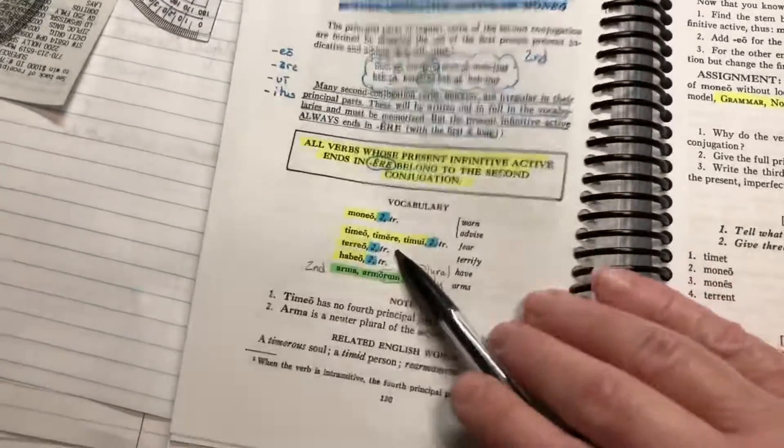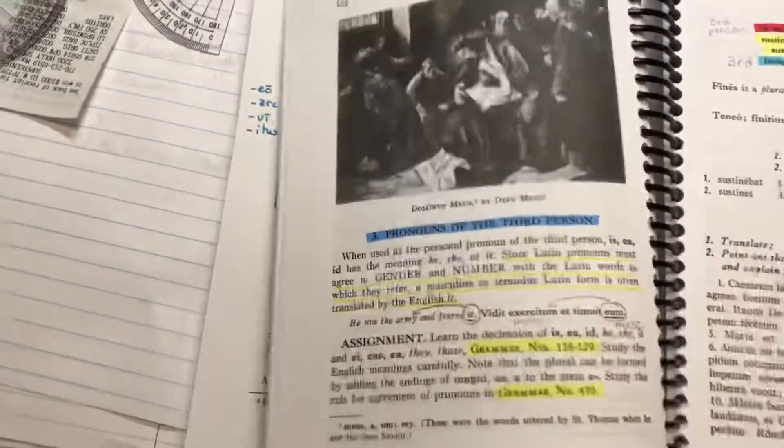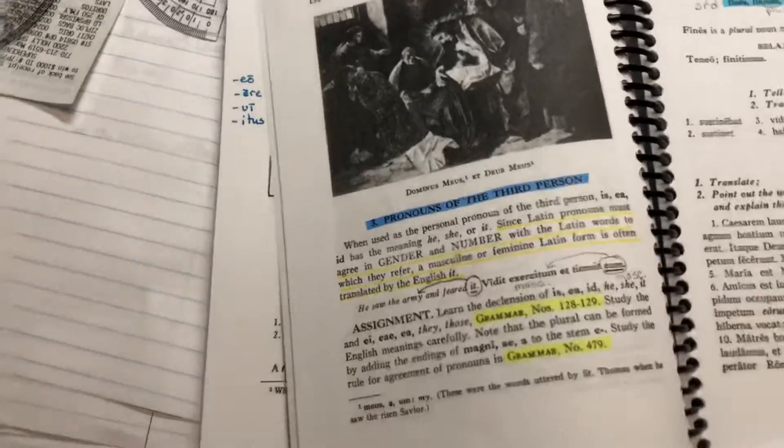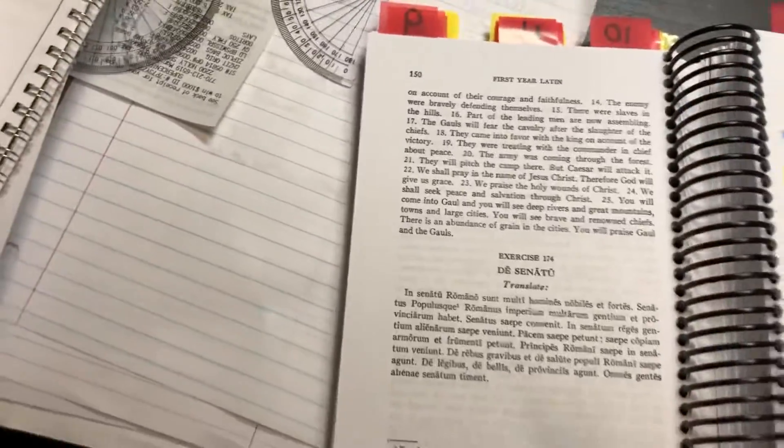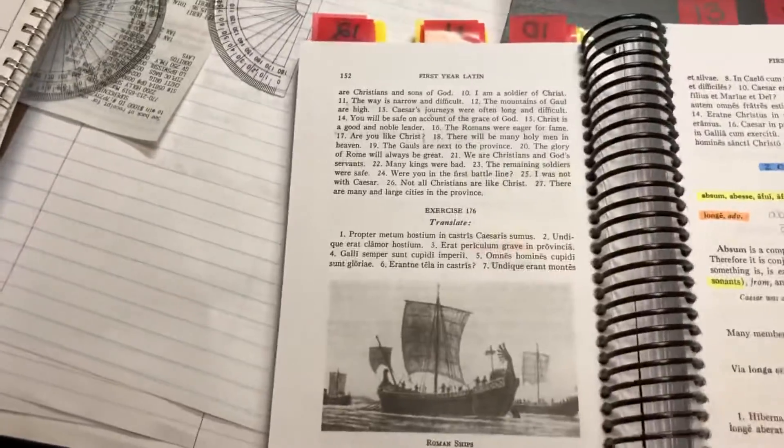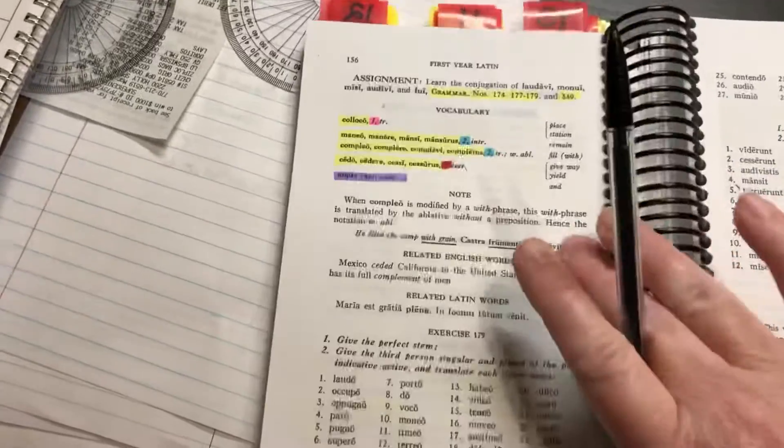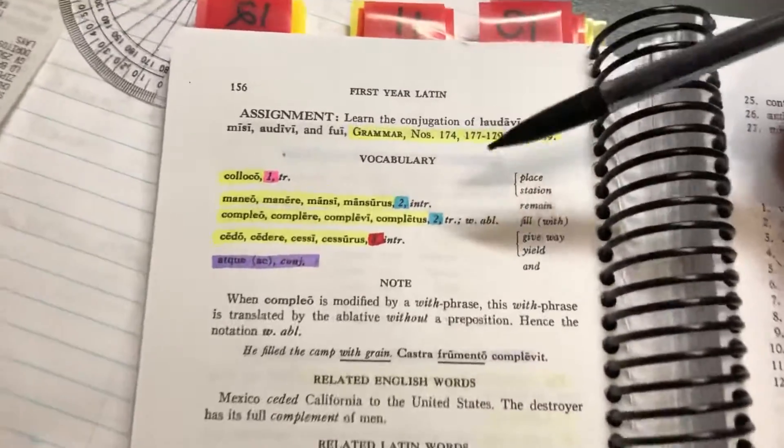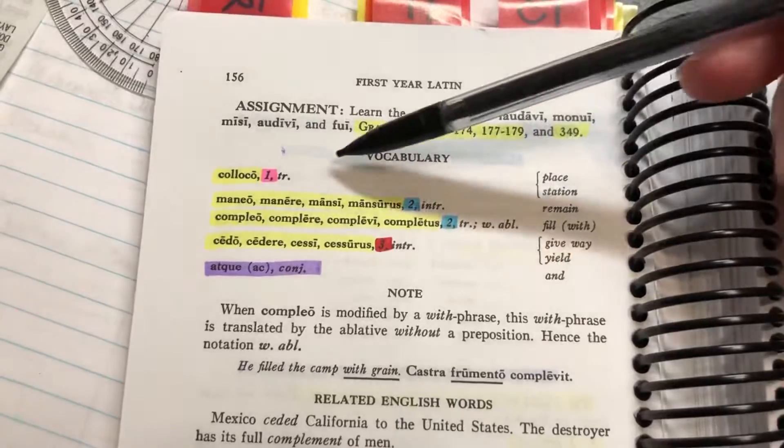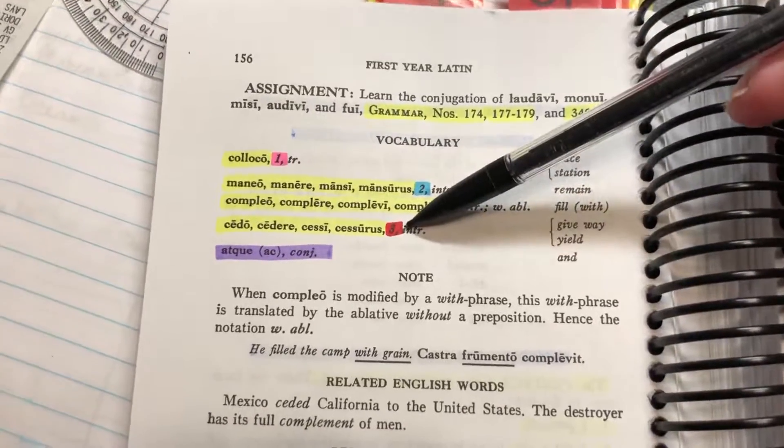There's a page I want to show you guys. Here's where we introduce second conjugation. This is a page that has multiple conjugations on the same page, so pink, blue, and red for first, second, and third.